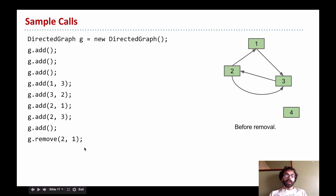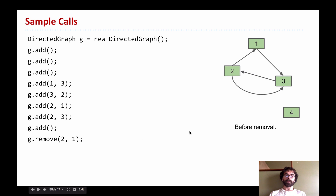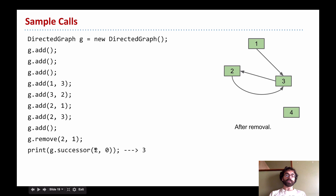We have removal operations, and again this is something to take into account when making your data structure selection. When we call remove(2, 1), that's saying take the edge which goes from vertex 2 to vertex 1 and remove it — it is not saying remove the oneth successor of 2, it's saying remove the edge between 2 and 1. That edge goes away, and now the zeroth successor of 2 is 3 because the earlier edge is gone.